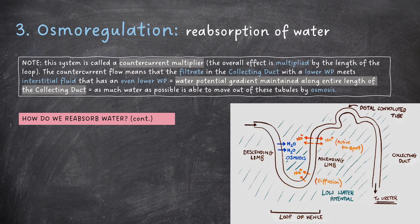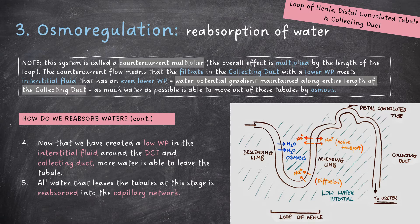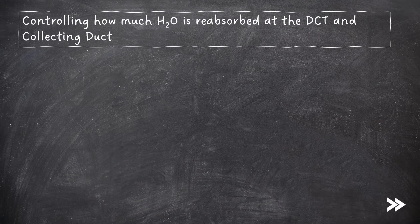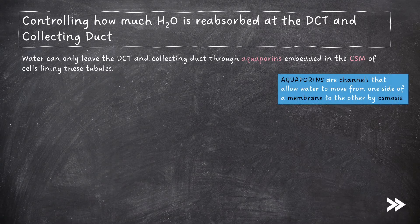Now that we have created a lower water potential in the interstitial fluid around the distal convoluted tubule and collecting duct, more water is able to leave the tubule. All the water that leaves these tubules at this stage is reabsorbed into the capillary network. Finally, how do we control how much water is reabsorbed at the distal convoluted tubule and collecting duct? Water can only leave the distal convoluted tubule and collecting duct through aquaporins embedded in the cell surface membrane of cells lining these tubules. Note that aquaporins are channels that allow water to move from one side of a membrane to the other by osmosis.